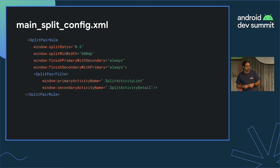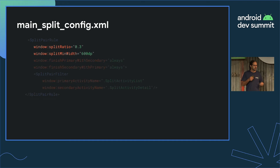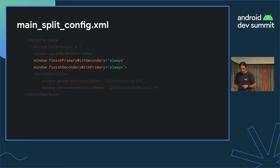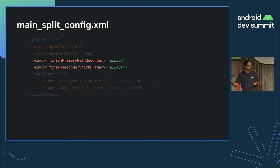Let's take a look at the code. This is basically the heart of activity embedding: a configuration file in XML. First, I'm going to define how I want to split the screen. The default is 50-50, and in this case I decided to go with 30-70, which sometimes works better on tablets. I also defined the minimum width to trigger a split: 600 dp. I chose this because this is the threshold to move from compact screen size to medium. We also defined that when all activities in one container are dismissed, the activities in the other container will be dismissed as well.